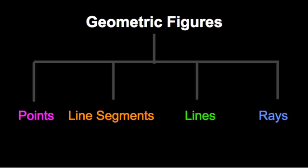So in geometry, you have seen these before — we can classify points, line segments, lines, and rays. They're all geometric figures, but kind of think of them like royalty, like a king and a queen and a prince and a princess. They all are part of the same family, but they all have a different job. So we're going to start with points today.